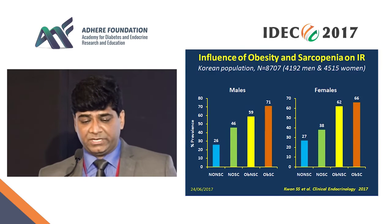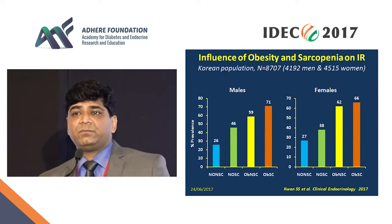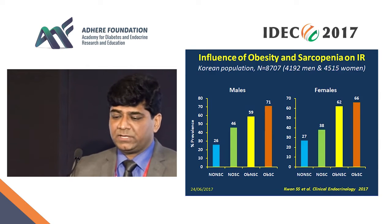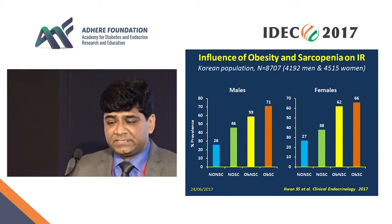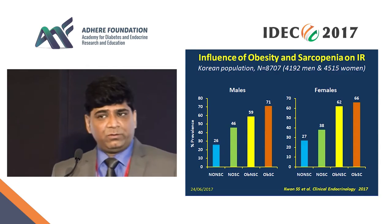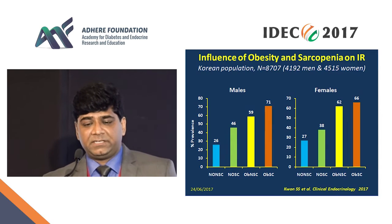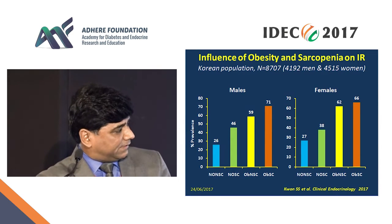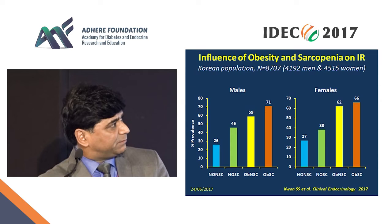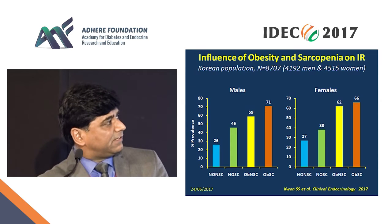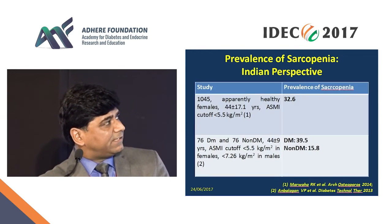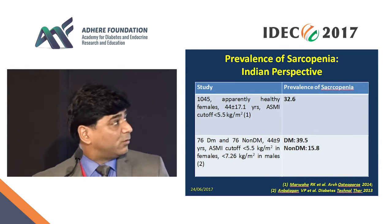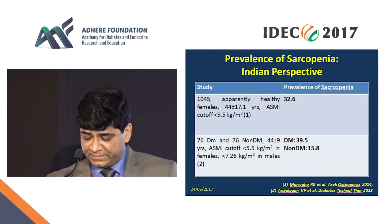Similar observations have been made in the Asian population. Data from a Korean study including over 8,700 subjects showed that across all groups, the prevalence of insulin resistance was highest in those with both sarcopenia and obesity, consistent with the Western population findings.